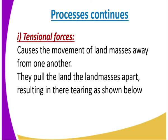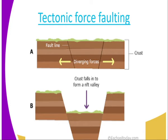Now let us look at these processes. When the tension force is applied, it causes the movement of land masses away from one another — it pushes the crusts away from one another, putting the land masses apart, resulting in their tearing as shown below. You can see diverging takes place, then there is the line of weakness, then the displacement.